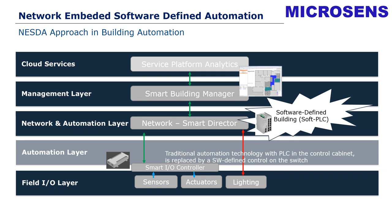We jump directly from the field into the network and provide automation out of the network. The top layers — management layer and cloud services — remain the same as before and cover the same functionalities. The main difference is that the automation layer has been virtualized by transferring its functionality into the network layer — into the switches.